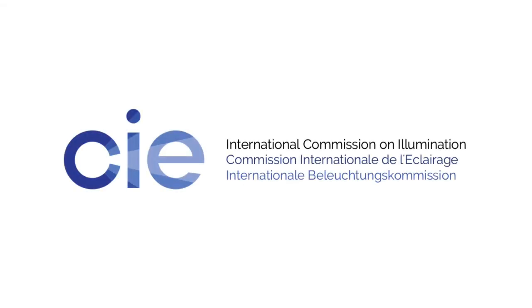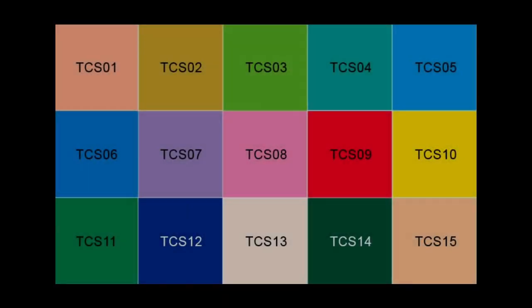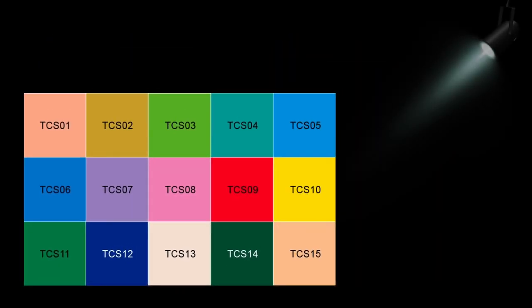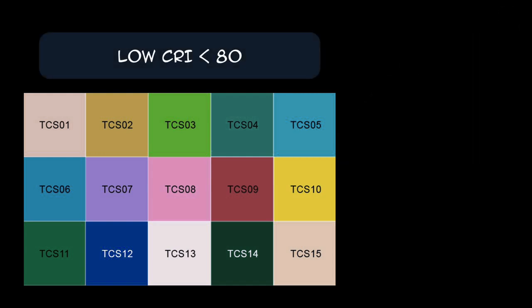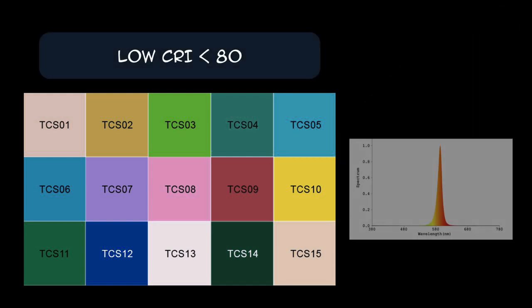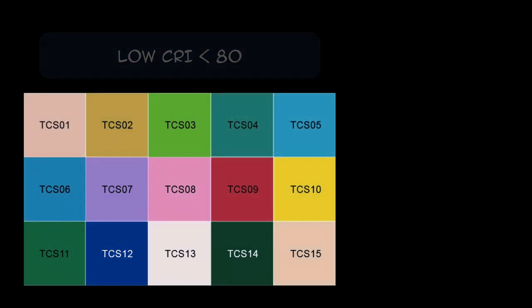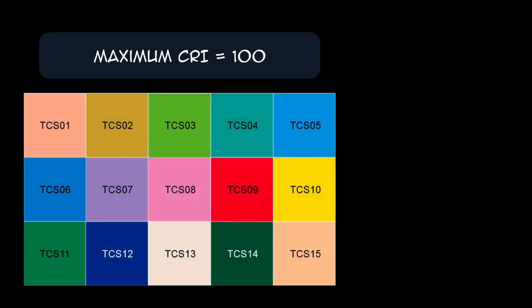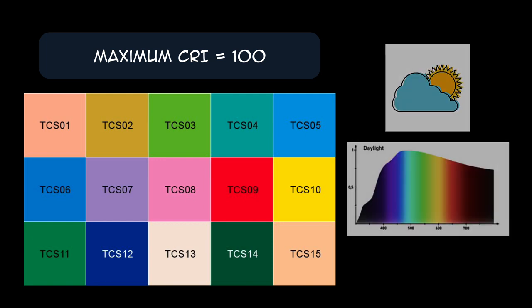Scientists at the International Commission on Illumination created a color accuracy test method that involves illuminating a set of standard color samples and measuring the shift in color appearance. Lower CRI scores indicate that the colors appear radically inaccurate, like the monochromatic light in the red car–black car example, while a maximum CRI score of 100 indicates that the colors appear 100% accurately — or more technically, exactly as they would appear under an ideal black body light source.